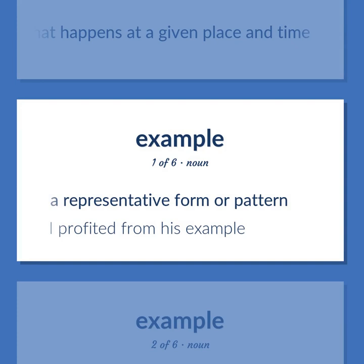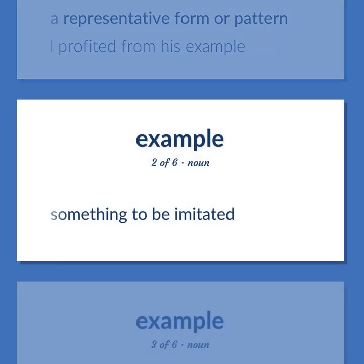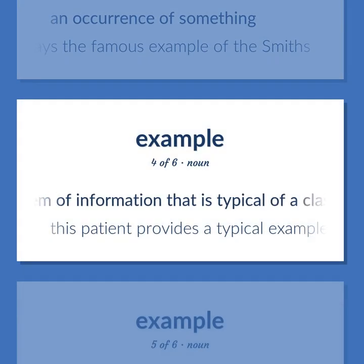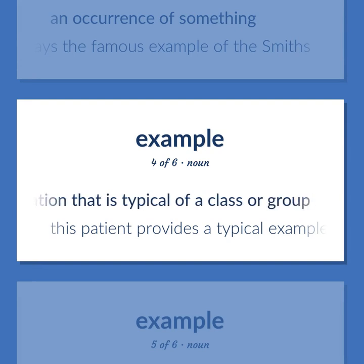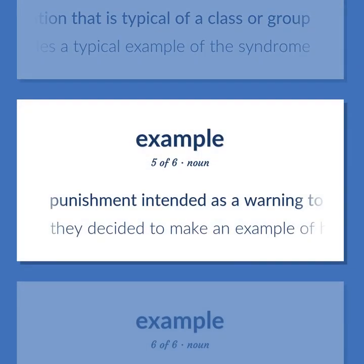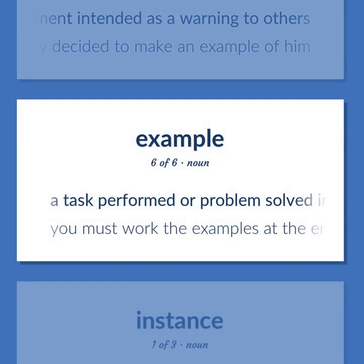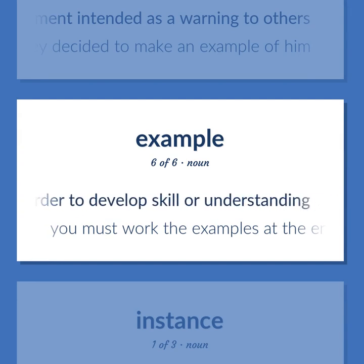EXAMPLE: A representative form or pattern — I profited from his example. Something to be imitated. An occurrence of something — but there is always the famous example of the Smiths. An item of information that is typical of a class or group — this patient provides a typical example of the syndrome. Punishment intended as a warning to others — they decided to make an example of him. A task performed or problem solved in order to develop skill or understanding — you must work the examples at the end of each chapter in the textbook.